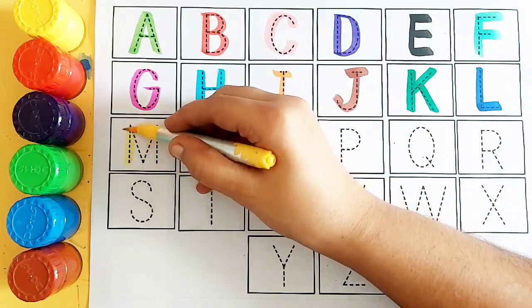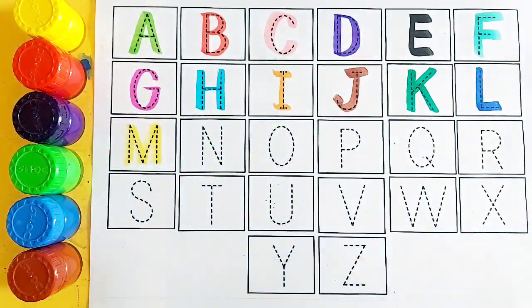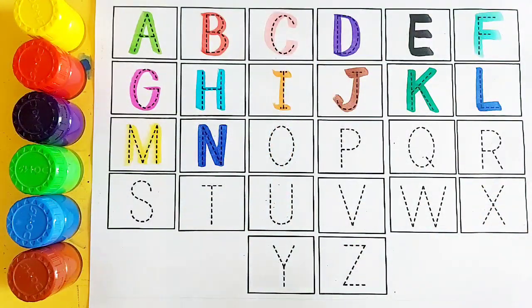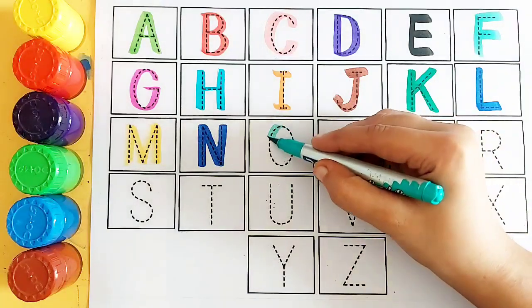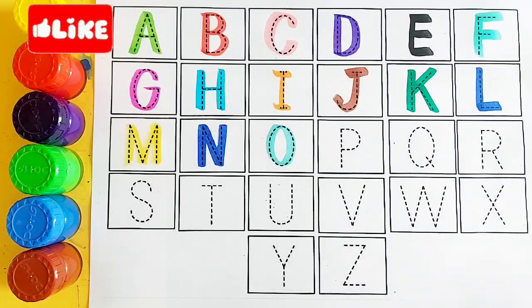Yellow color. M. M for mango, M for mango. Blue color. N. N for nest, N for nest. Sea green color. O. O for orange, O for orange.